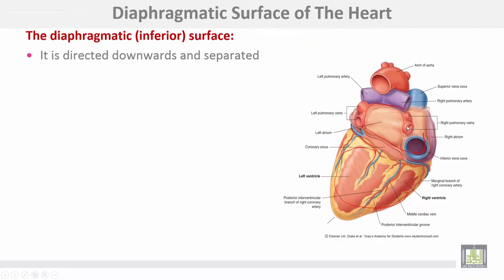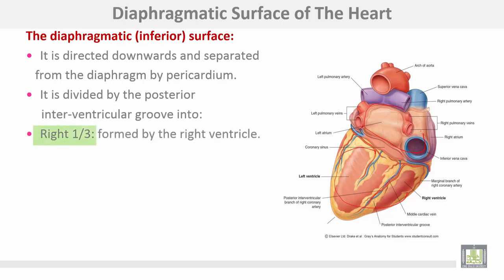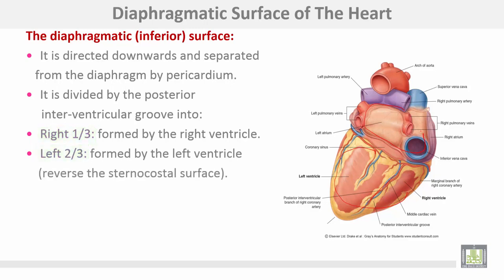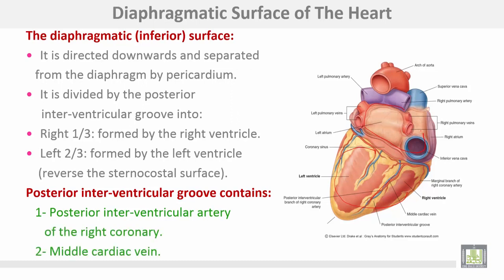The diaphragmatic surface is directed downwards and separated from the diaphragm by the pericardium. It is divided by the posterior interventricular groove into right one-third formed by the right ventricle and left two-thirds formed by the left ventricle — the reverse of the sternocostal surface. The posterior interventricular groove contains the posterior interventricular artery of the right coronary and the middle cardiac vein.